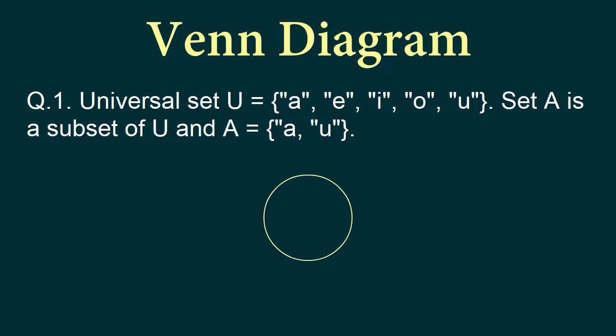The first thing we are going to do is draw a circle which represents our set A. What is inside this circle? This circle represents set A, and A contains A and U. Let's say this point is A and this point is U. So these are the two elements of set A.